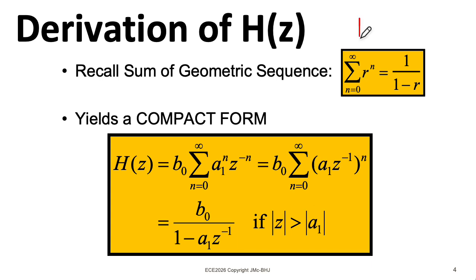Now recall that the summation only works if the magnitude of r is less than one. Now r is a_1 over z. So we'll say that this summation formula only works if the magnitude of z is greater than the magnitude of a_1. This is the region of convergence. Fortunately, in EC 2026, we generally don't have to worry about this in a whole lot of detail.